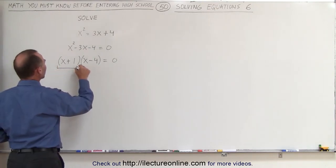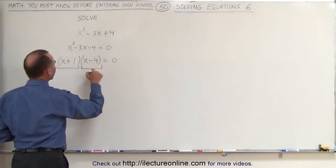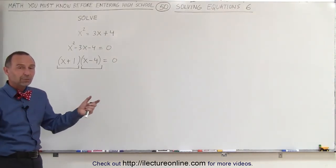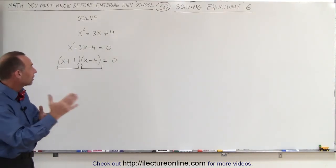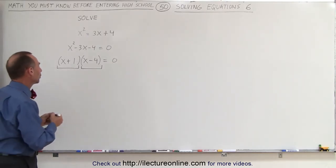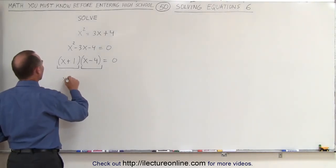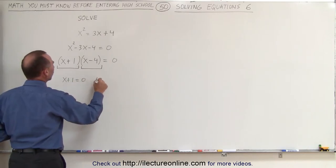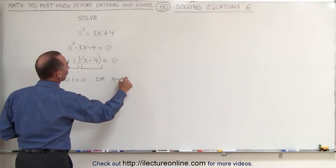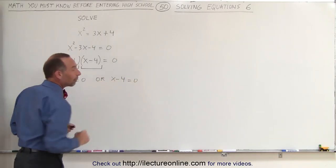Again, we have the product of two binomials. The first binomial multiplied times the second binomial gives us zero, which means when you multiply two things together and you get a zero, either one is zero or the other must be zero. In other words, either x + 1 must equal zero or x - 4 must equal zero. That's the only possibilities.